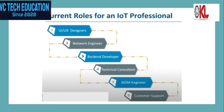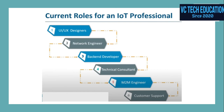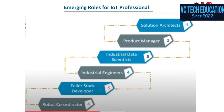Current roles for an IoT professional include UI/UX designers, network engineers, back-end developers, technical consultant, M2M engineer that is machine to machine engineer, and customer support technician. Emerging roles in IoT are robot coordinator, full stack developer, industrial engineer, industrial data scientist, product manager, and solution architects. AWS solution architects are the highest paid and highly certified people in the cloud environment.